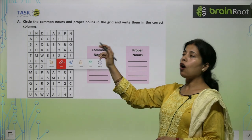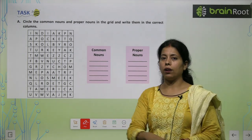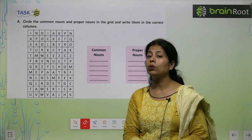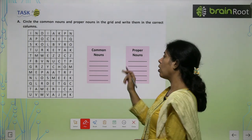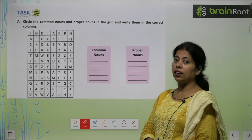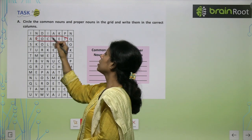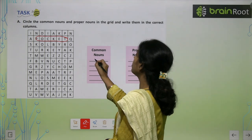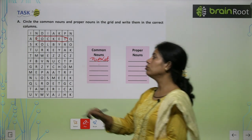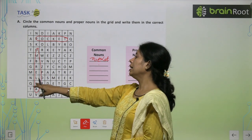Task: Circle the common nouns and proper nouns in the grid and write them in the correct columns. इस grid में common noun और proper noun दिये गए हैं। Common nouns include: pocket (P-O-C-K-E-T) and umbrella (U-M-B-R-E-L-L-A). India is a proper noun — the name of a country.